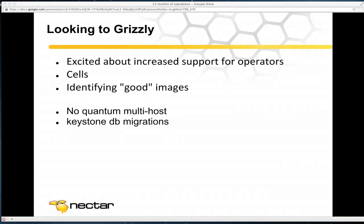Some of the things we're looking forward to in Grizzly are more operational tools. One thing that I think is lacking in OpenStack is tooling that makes it easy to operate — simple things like querying for users or who's got a given role. There's also a nice patch we've got in for images in the dashboard where we can list images in a certain category — so we can say 'these are Gold Star Nectar approved images', 'these are ones you've created', and 'these ones are the Wild West — use at your own risk.'